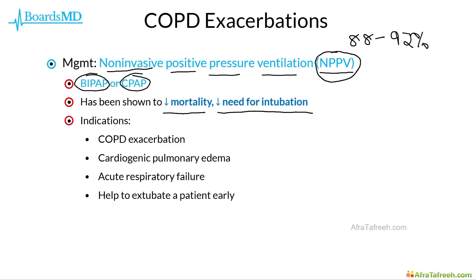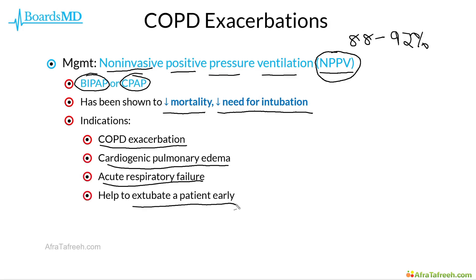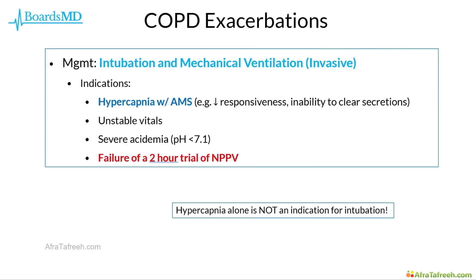Indications for the use of NPPV include COPD exacerbations, cardiogenic pulmonary edema, acute respiratory failure, as well as helping us to extubate a patient early in other contexts. However, in scenarios where our non-invasive NPPV measures are not sufficient for our patients with COPD exacerbations, then we should move on to intubation with mechanical ventilation, which of course is an invasive procedure.